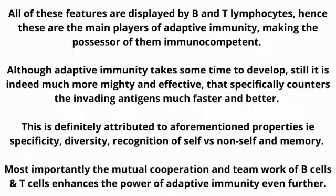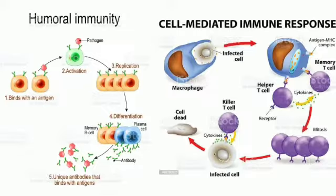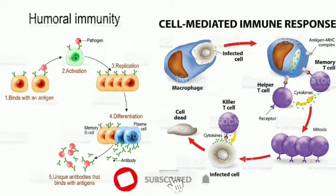Most importantly, the mutual cooperation and teamwork of B cells and T cells enhances the power of adaptive immunity even further. B lymphocytes produce antibodies after the appropriate clonal selection required to clear a particular antigen from the host body, so it's called humoral immunity. On the other hand, T lymphocytes themselves participate physically in receiving the processed antigen.